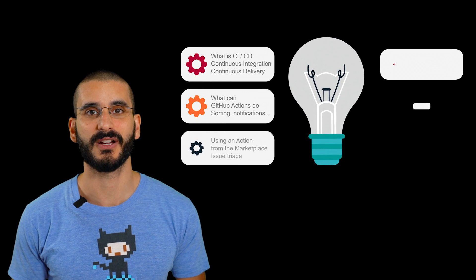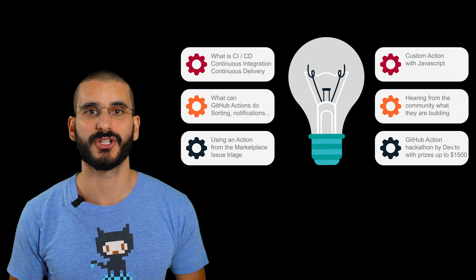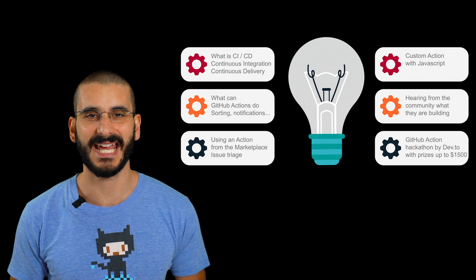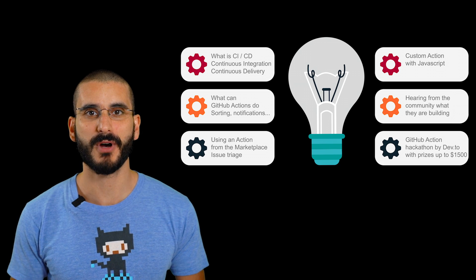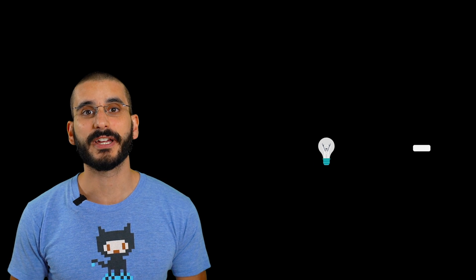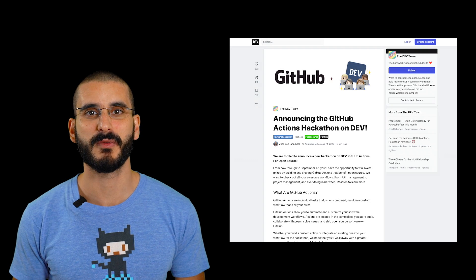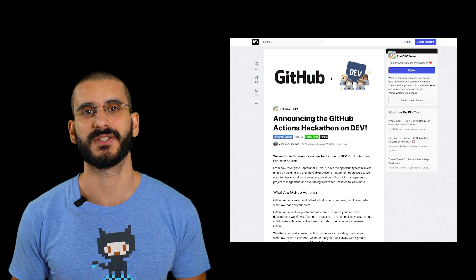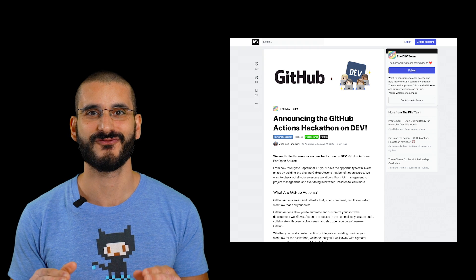In this video we're going to cover what is continuous integration and continuous delivery, what it can do for you, and specifically focusing on GitHub Actions — from sorting data to running automated tests to sending notifications. There's a huge marketplace with almost 5,000 plugins you can use easily with a couple of lines of YAML config. We'll also cover how to write your own custom plugin, from Hello World to sorting a JSON file and rewriting your README in HTML. You'll also hear what the community are up to, and there's a GitHub Actions hackathon by Dev.to with prizes up to $1,500.